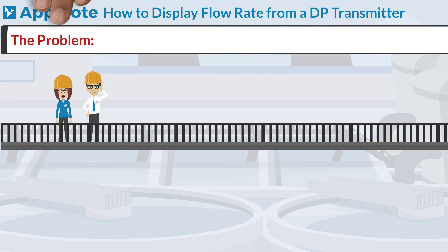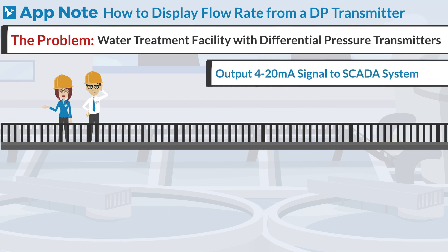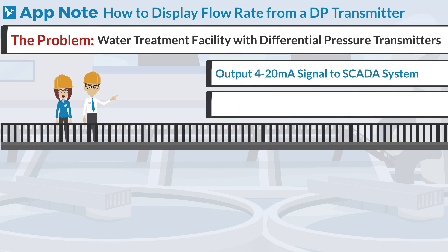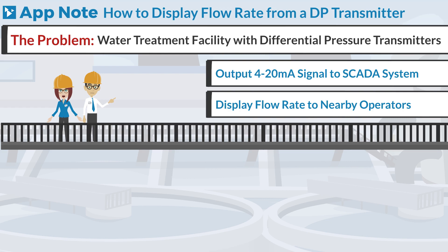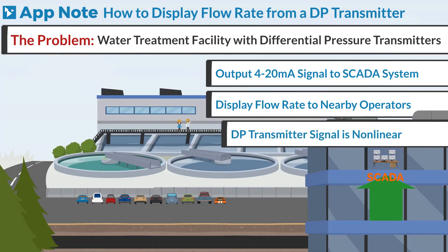A water treatment facility has differential pressure transmitters that output a 4 to 20 milliamp signal to their SCADA system. They also want to display the flow rate to the operators working nearby, but the signal from the differential pressure transmitter is non-linear.